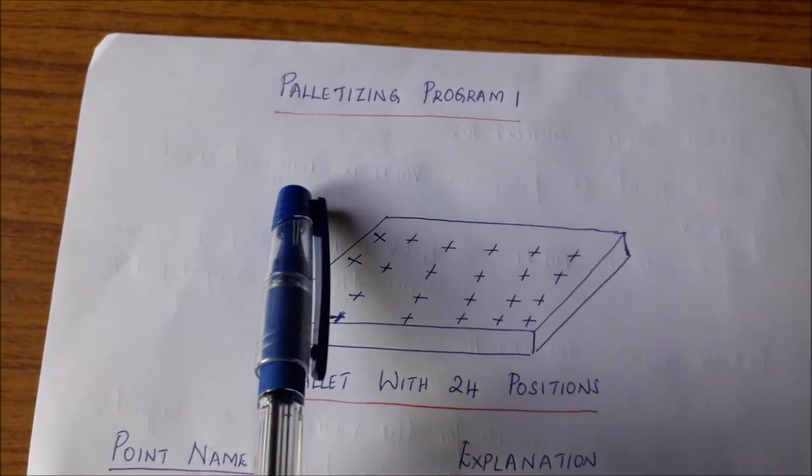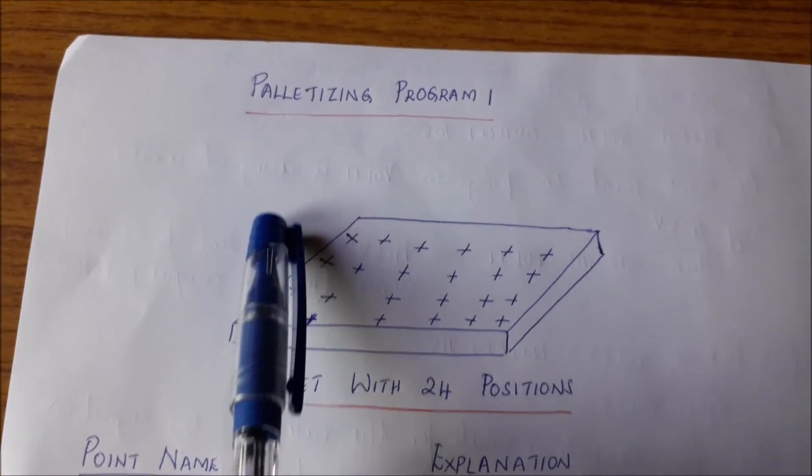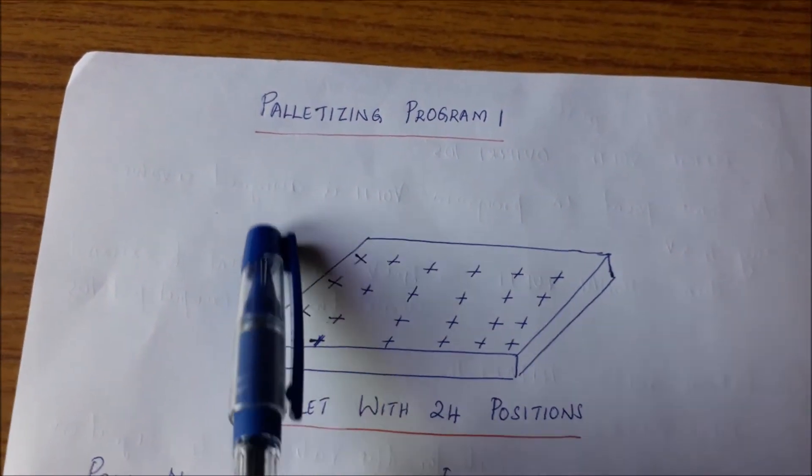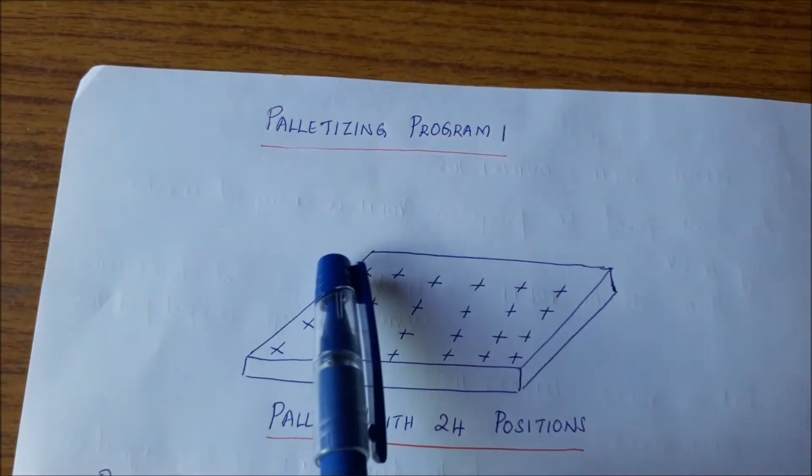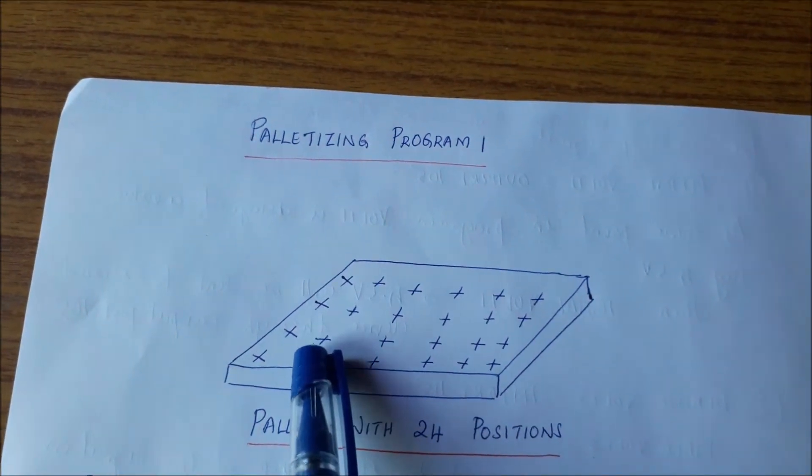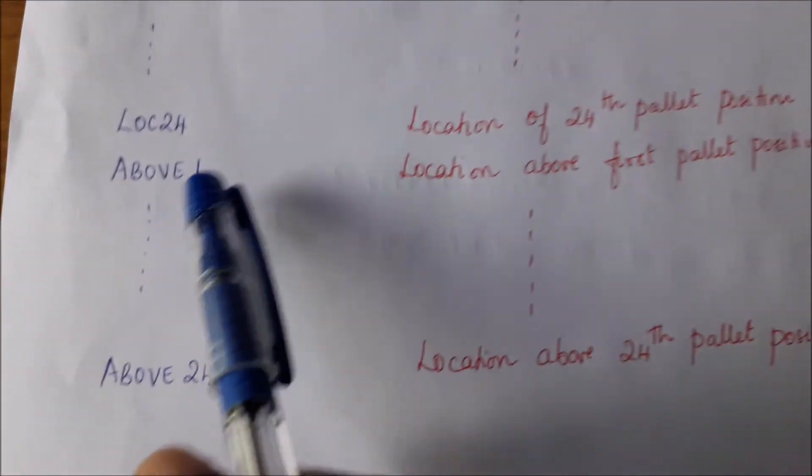So the process of placing a part on the pallet is not to come like this and place the parts. What we do is, we bring the end effector here with the part above the location in the pallet and then bring it in a straight line down here. Place the part, go up and then go back to the shoot. So the next location also, we come like this. We come to a point above location 2, come down, place the part, then go back to the shoot to pick up the next part.